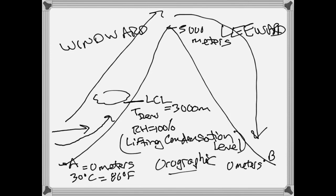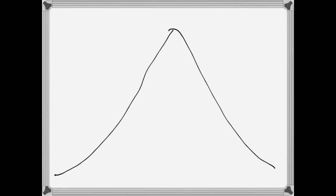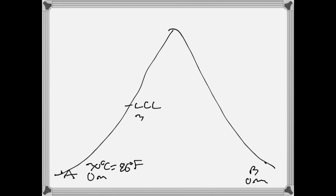To summarize our setup: city A is at zero meters at 30 degrees centigrade; the Lifting Condensation Level is at 3,000 meters; the peak is at 5,000 meters; and city B on the leeward side is at zero meters with an unknown temperature. Our first task is to figure out the temperature at the LCL — that is, the dew point temperature.